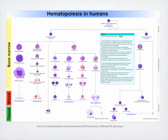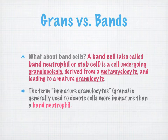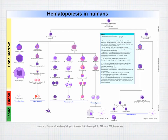Looking at hematopoiesis in humans: at the bottom of the diagram in a bluish color you can see thrombopoiesis, erythropoiesis, granulopoiesis, and monocytopoiesis. Granulopoiesis comes from myeloblasts, and we have metamyelocytes dropping down into band cells, then all the way down to basophils, neutrophils, eosinophils, and monocytes. The immature granulocyte comes first, then the band cell, both derived from a metamyelocyte.